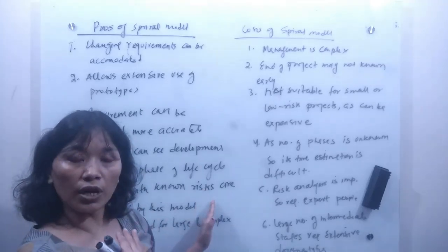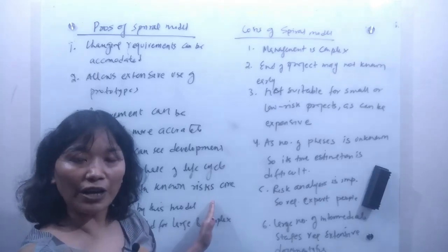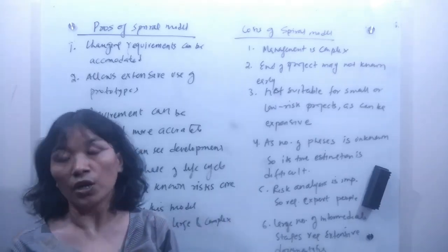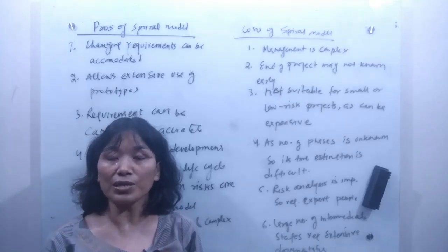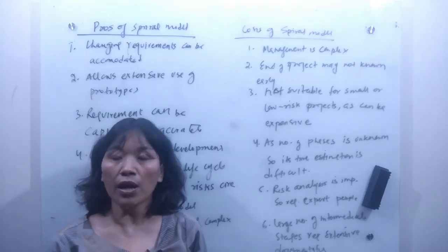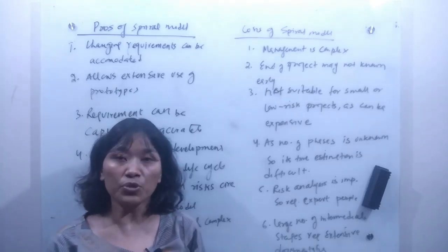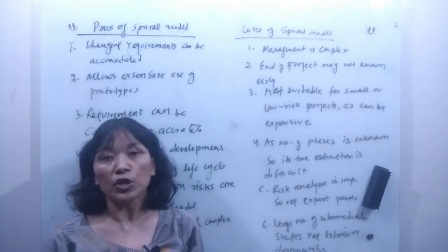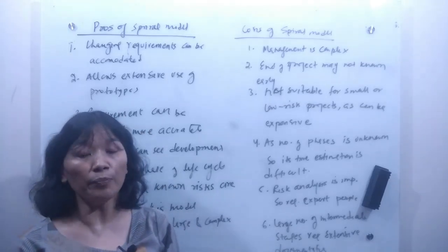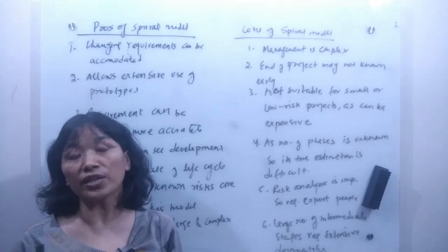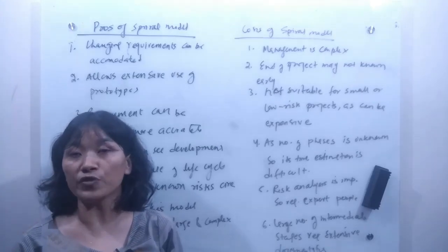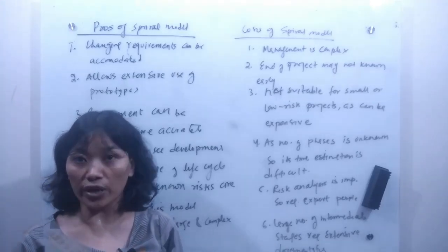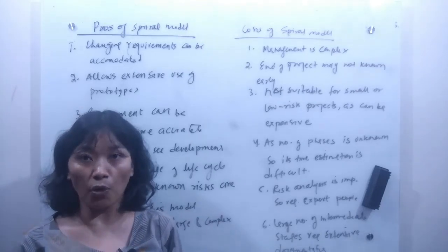The spiral model is also called the meta-model because it subsumes all the SDLC models. I hope you understand when to use the spiral model and what its advantages and disadvantages are. Today's topic is the spiral model — if you have any queries, you may write them in the comment box.